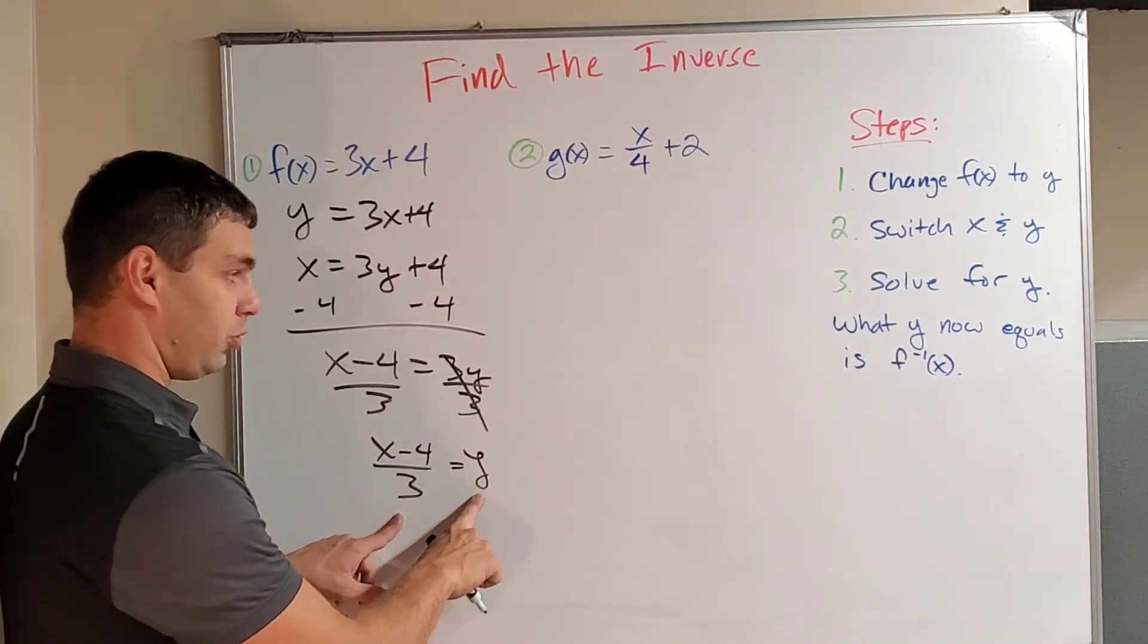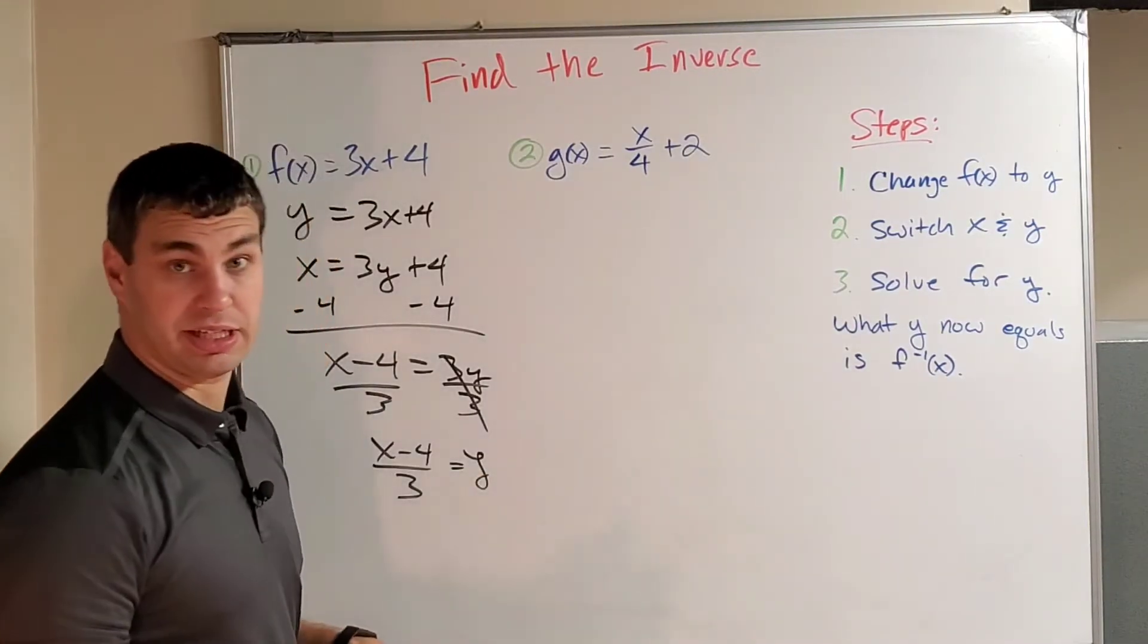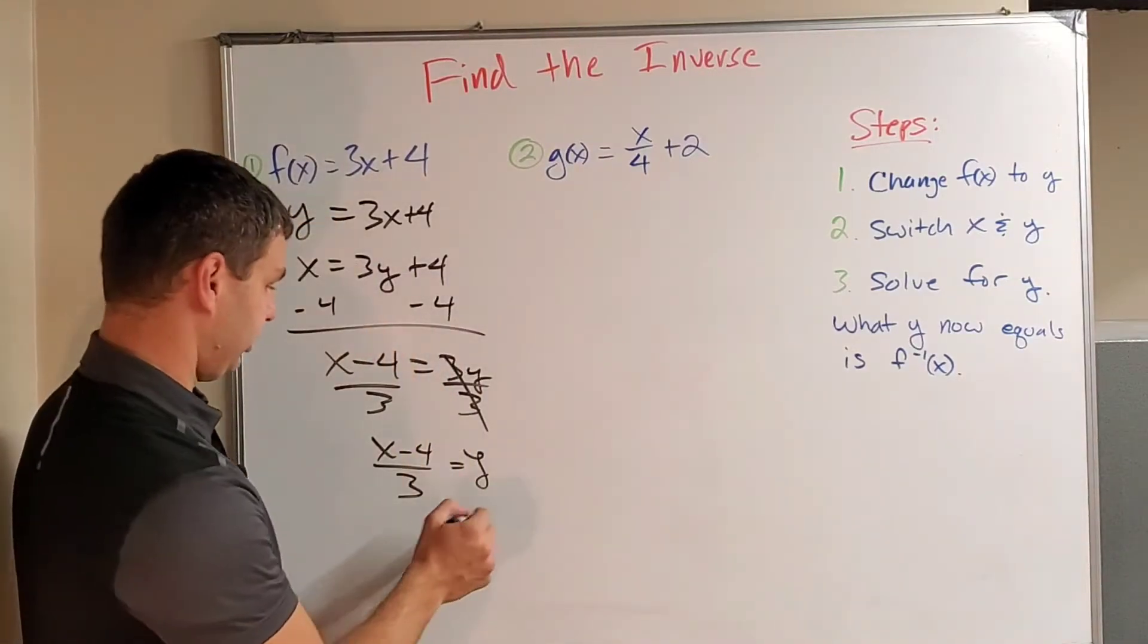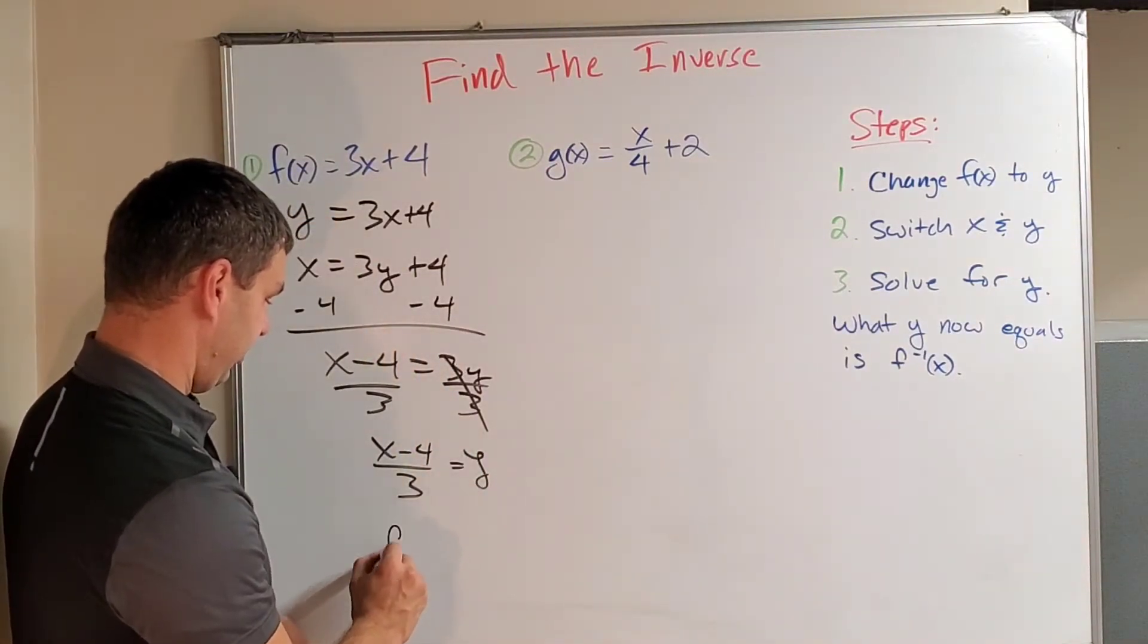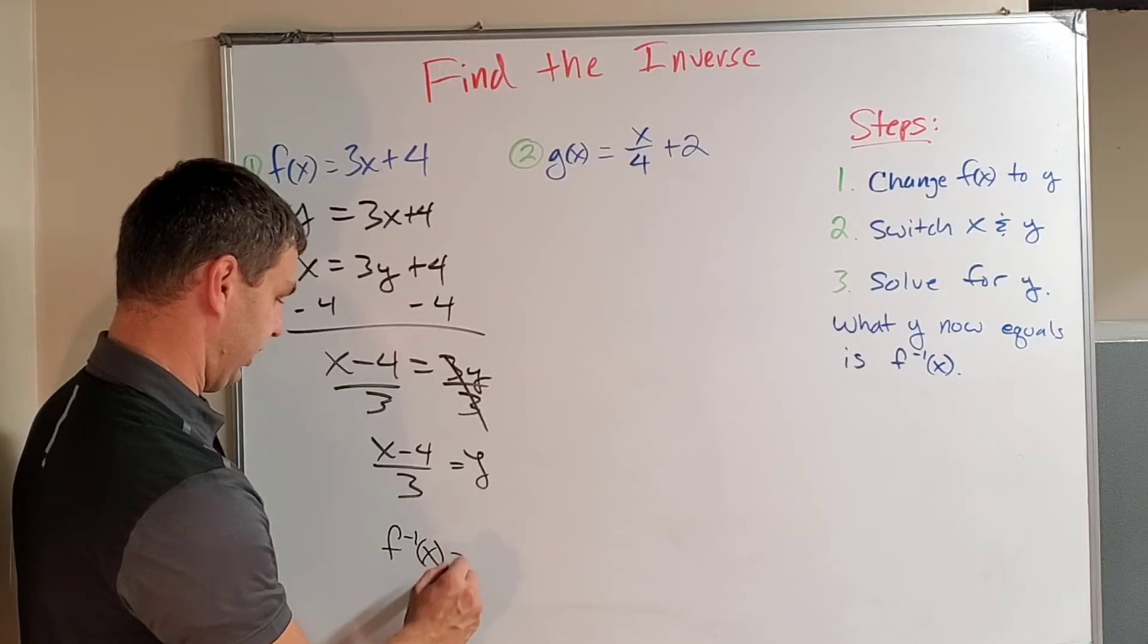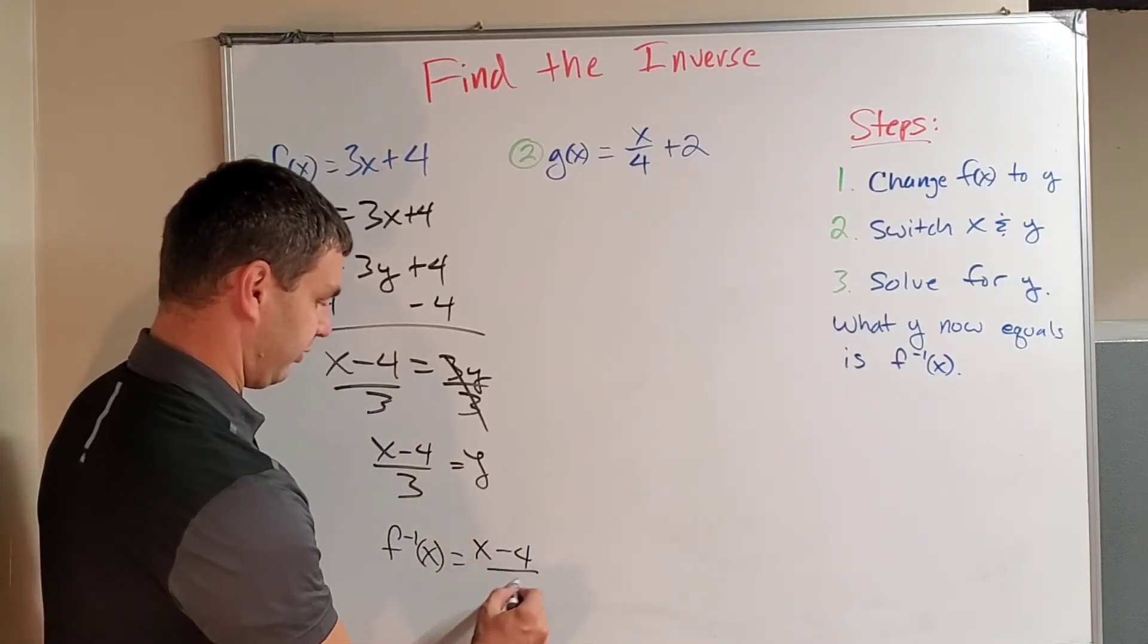Okay? Now, remember, it's not y anymore. It's going to be the inverse of f. So instead of y, I'm going to say it'd be f inverse of x equals x minus 4 over 3.